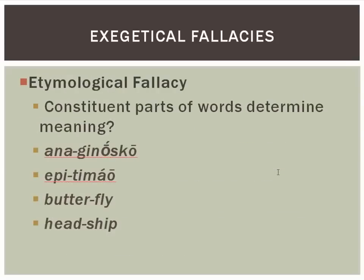Third one: the etymological fallacy — the idea that constituent parts of words determine meaning. Two illustrations in Greek. 'Anaginosko' — there's a verb, two parts: 'ana,' which means 'up' or 'above,' and 'ginosko,' which means 'to know.' You would think if we took the word apart into its constituent parts, the meaning would be something like 'to know up' or 'to know above' — which doesn't make any sense. 'Anaginosko' actually means 'to read.' The constituent parts have nothing to contribute to that. Next: 'epitimao.' 'Epi' means 'on' or 'upon,' and 'timao' by itself means 'to honor' — so you'd think the parts give you 'to honor upon,' but it means 'to rebuke.' The constituent parts do not create the meaning.